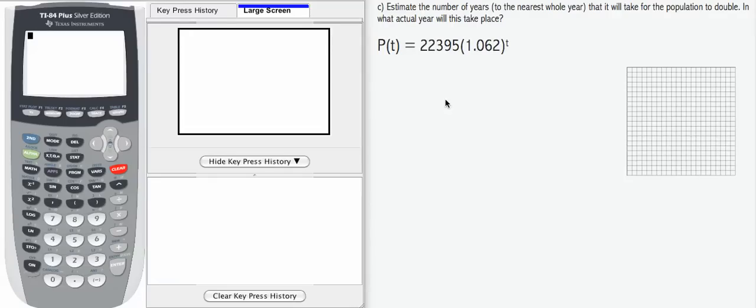The function that we found in Part A for exponential growth was P(t) = 22,395 times 1.062 to the t. If we want to know when this function is going to double, then we want to know when the output of this function is going to be twice the original.